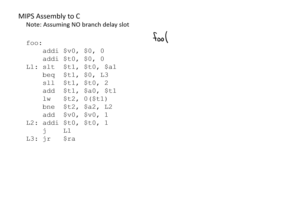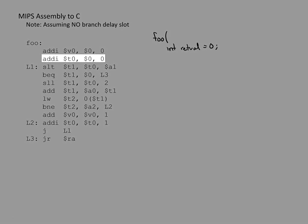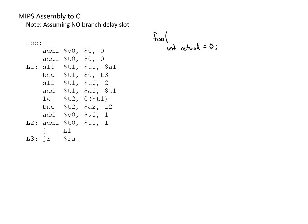Looking at the first instruction, it assigns the value 0 to register V0. In MIPS, V0 is used to hold the return value. So this first line is essentially saying we're making an integer — I'll call it retval for return value — equal to 0. The next line sets temporary register T0 to 0 as well, so I'll say we have a variable M initialized to 0.